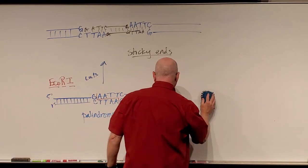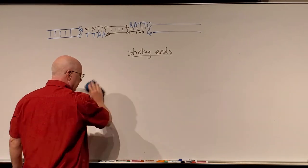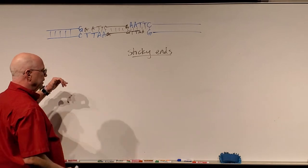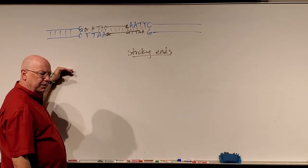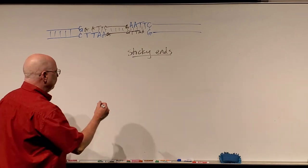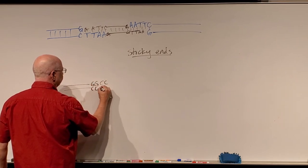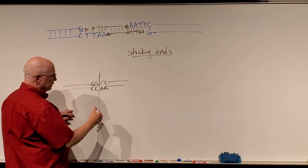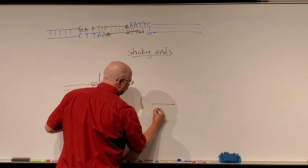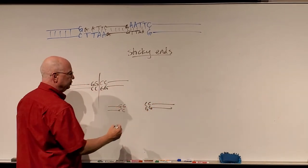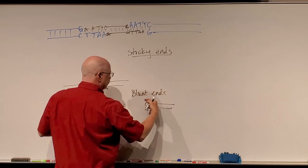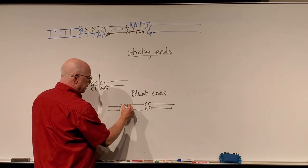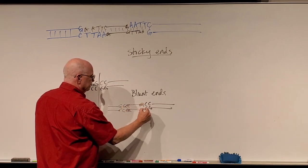There's another type of restriction site that does not give sticky ends — it comes from Haemophilus aegyptius, HAE3. This enzyme recognizes any time there are two G's and two C's in opposite directions — a palindrome — and cuts right in the middle. What we get is blunt ends on both strands, with no overhang. I can literally insert another piece of DNA in between these blunt ends, as long as it has the matching CC and GG recognition sequences.